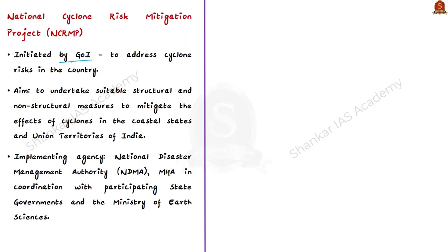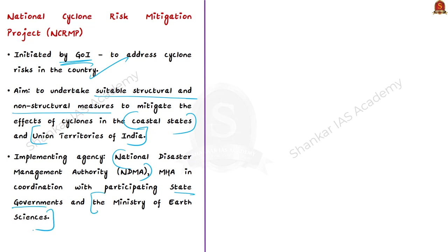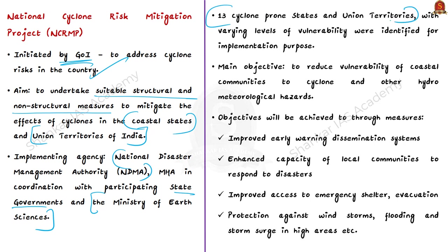The National Cyclone Risk Mitigation Project was initiated by the Government of India to address cyclone risks in the country. Its overall objective is to undertake suitable structural and non-structural measures to mitigate the effects of cyclones in the coastal states and Union Territories of India. The National Disaster Management Authority under the Ministry of Home Affairs will implement this project in coordination with participating state governments and the Ministry of Earth Sciences. The project has identified 13 cyclone-prone states and Union Territories with varying levels of vulnerability, with the main objective of reducing vulnerability of coastal communities to cyclones and other hydro-meteorological hazards.